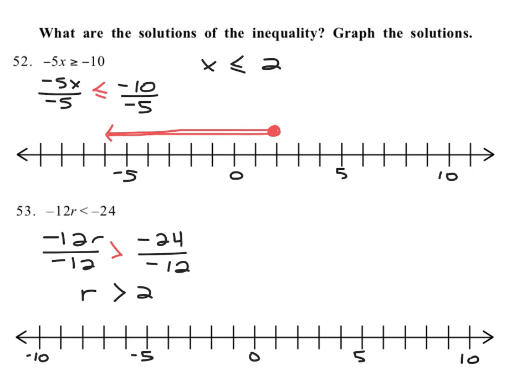r is greater than two, so we have an endpoint at two — just like the one above. However, do we fill it in? No, we do not fill it in, because it doesn't say 'or equals.' And do we want the values greater than two? Yes — r is greater than two, so we shade to the right.